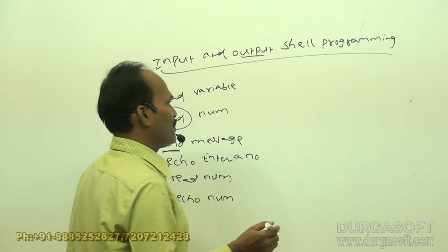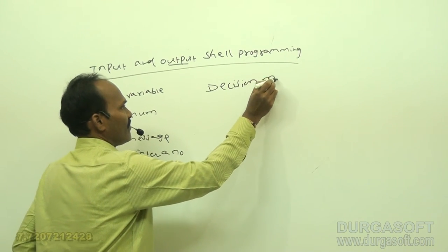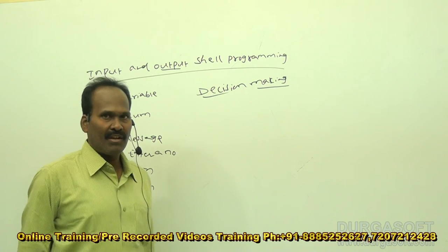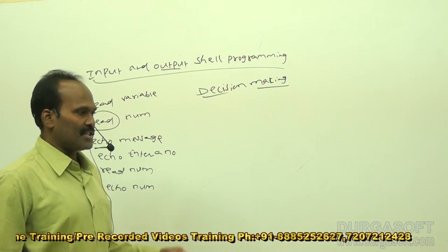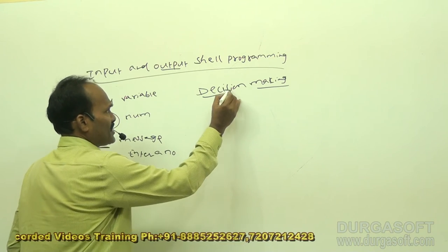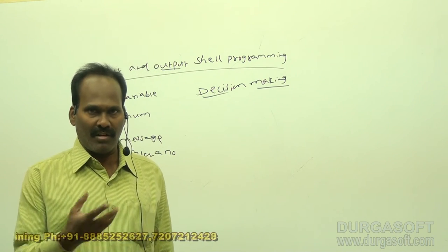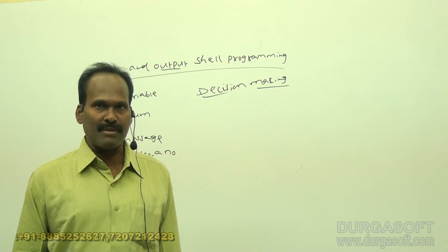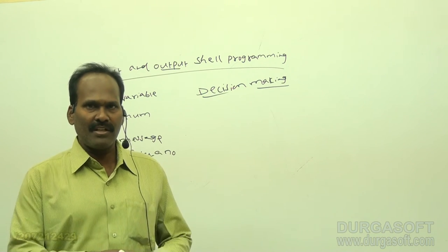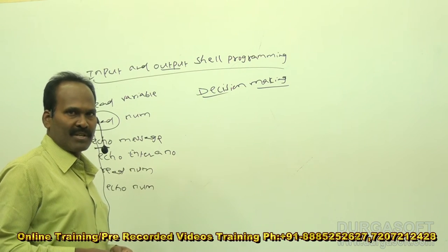After input and output, we discuss decision making in shell programming. Like in C, C++, and Java, shell programs also use if conditions for making decisions, though the syntax is somewhat different. Using decision making statements, we can perform branching and conditional execution — executing a set of single or multiple statements depending on a criteria.